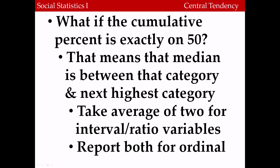What happens if the median falls exactly on 50? That means the median is between that category and the next highest category. If we're dealing with an interval ratio number, we would just take the average of those two categories. For ordinal measures, we would just report both.